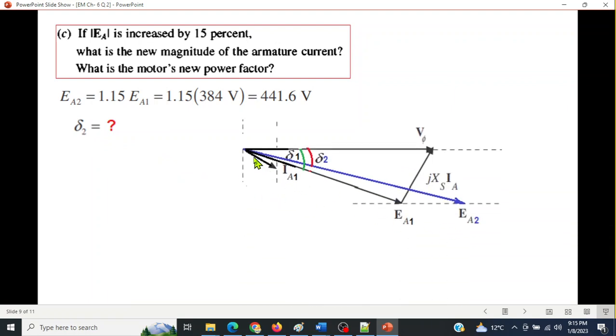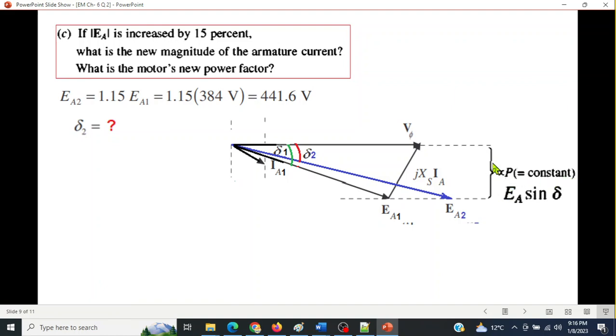And now what is the angle delta? Delta 2 actually. So this was our old Ea1. And this is our new Ea2, its length is more, 446 now, instead of 384. One point, we can only slide it along this line because this magnitude is fixed, fixed by the power. So we can move only in this way. We can't go like here. So that is one point. Now we need to find this value of delta 2.